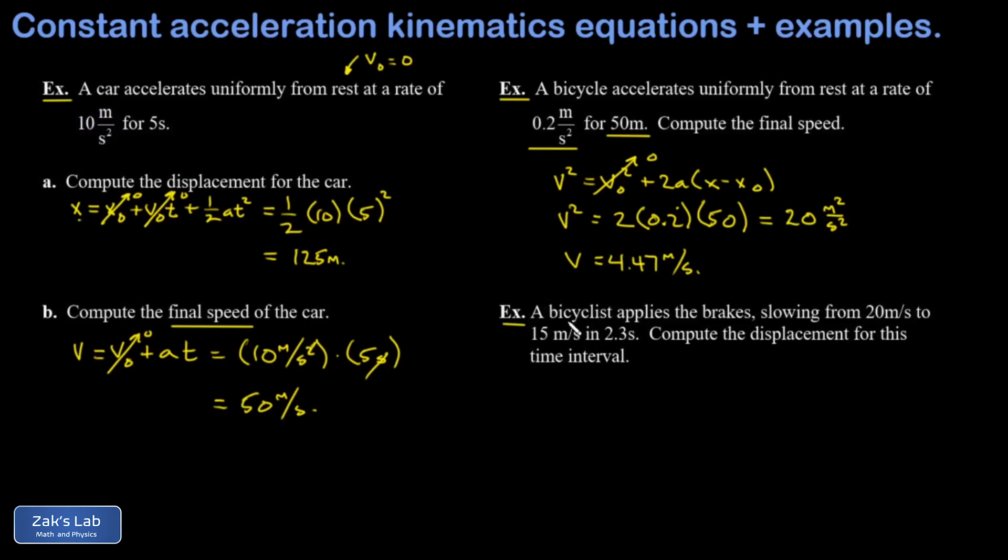Finally, we have a bicyclist applying the brakes and slowing from an initial speed of 20 meters per second to a final speed of 15 meters per second in a known amount of time, 2.3 seconds. And we want the displacement. And what we don't care about in this one is the acceleration. So the fourth equation is perfect for this. The left-hand side of that is the displacement x minus x naught. And all I have to do is plug in the initial and final speed, 20 plus 15 over 2, and then multiply by how long this braking process is happening, which is 2.3 seconds. Into three sig figs, I get 40.3 meters. And we're done.